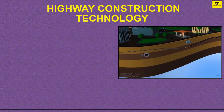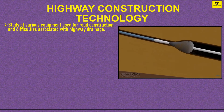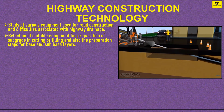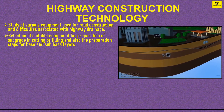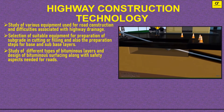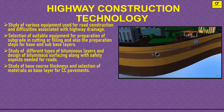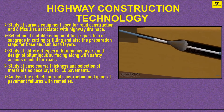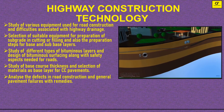Highway Construction Technology involves study of various equipment used for road construction and difficulties associated with highway drainage, selection of suitable equipment for preparation of subgrade in cutting or filling and preparation steps for base and sub-base layers, study of different types of bituminous layers and design of bituminous surfacing along with safety aspects, study of base course thickness and material selection for CC pavements, and analyzing defects in road construction and general pavement failures with remedies.